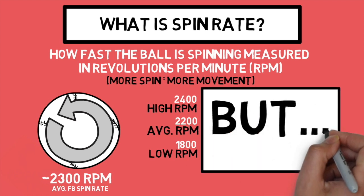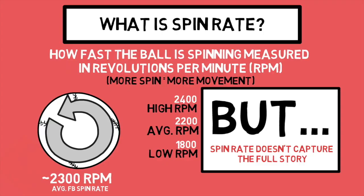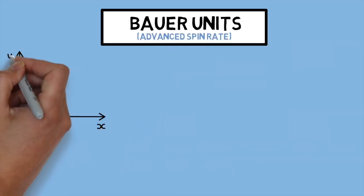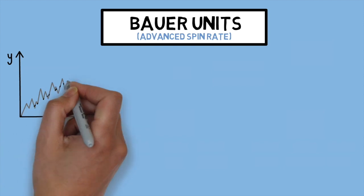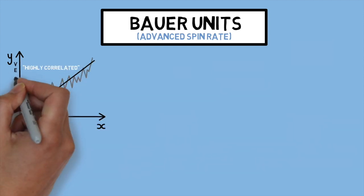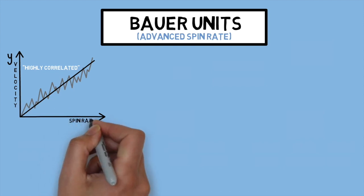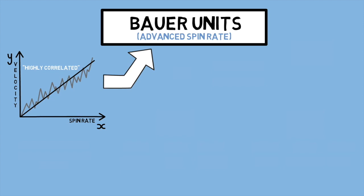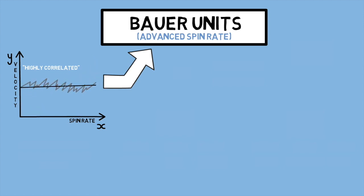However, spin rate doesn't tell us the whole story. In comes Bauer units — another metric we've discussed on the channel before. You can think of this metric like an advanced version of spin rate. Our reason for turning to this statistic rather than just flat-out spin rate is due to the relationship between velocity and spin rate. As velocity increases, so does spin rate — what we nerds call a highly correlated relationship. Bauer units aim to normalize our data by taking velocity out of the equation. To do this, all you have to do is divide your spin rate number by that pitch's velocity.